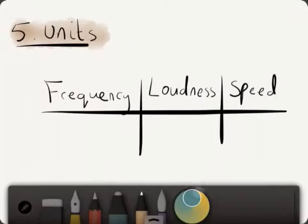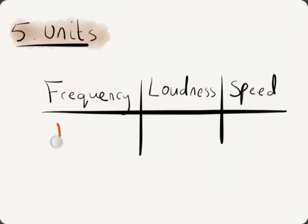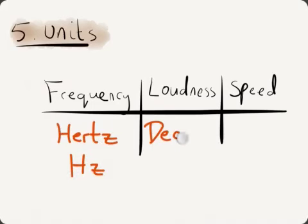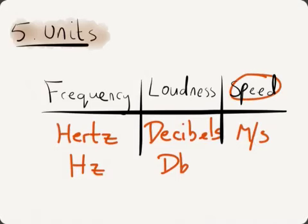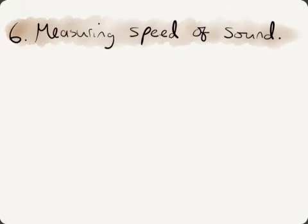Units. There's a couple of units we've been using recently, so just to be really clear on them. Frequency is measured in hertz, with a Z on the end, big H little Z. Loudness is measured in decibels, DB. And speed is measured in metres per second. And I say speed because the next one is the big question at the end, measuring speed of sound.